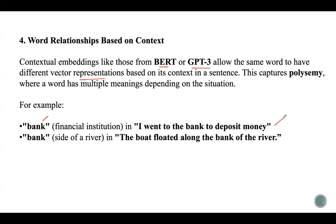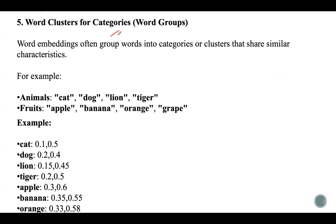Word embeddings often group words into categories or clusters. Words that are similar to each other are placed in one cluster. For example, 'cat,' 'dog,' 'lion,' and 'tiger' will all be placed in the animal group, while 'apple,' 'banana,' 'orange,' and 'grape' will be placed in the fruit cluster. In the vector space, the embeddings for animals cluster together, while the embeddings for fruits form a separate cluster.